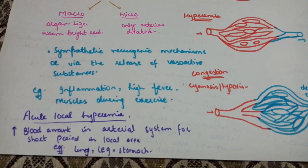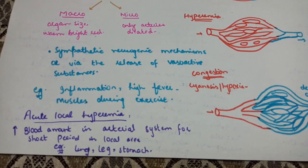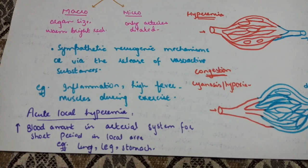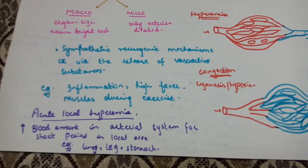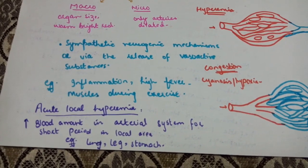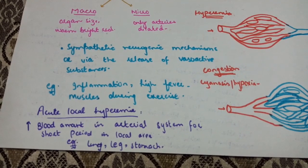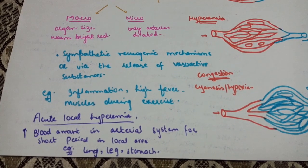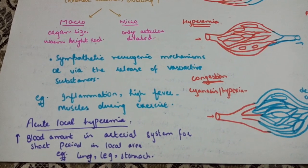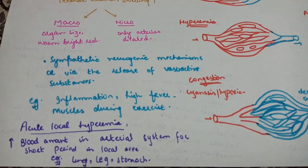What is acute local hyperemia? Local hyperemia means an increase in blood amount in the arterial system for short periods in a local area. Examples include the lung, leg, and stomach.